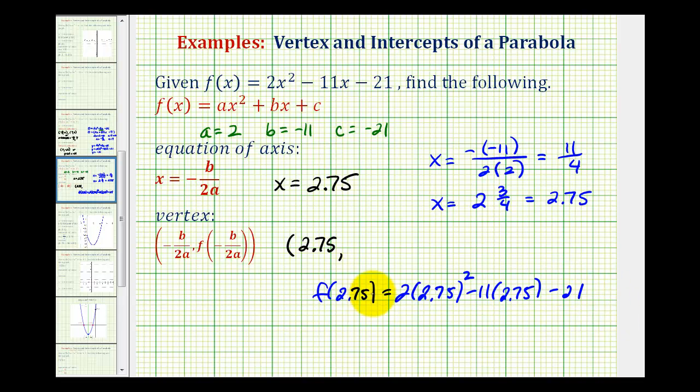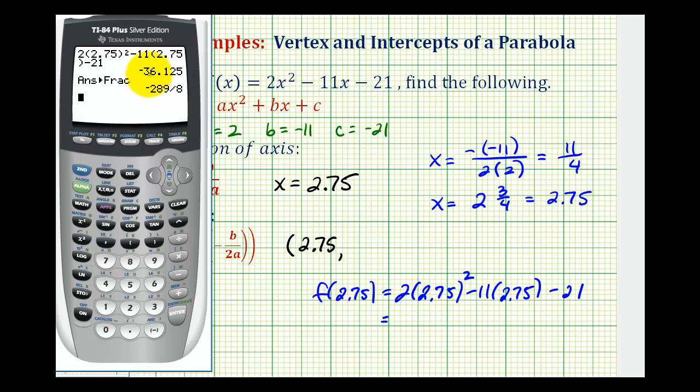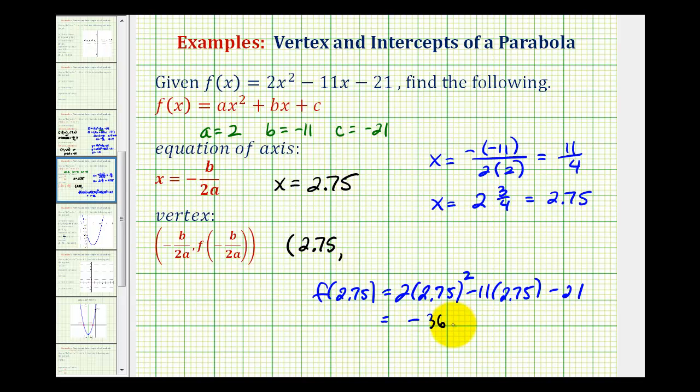Let's go ahead and do this on the calculator. Here's the squared key. So the y coordinate of the vertex is negative 36.125. If we did want this as a fraction, we can always press math, enter, enter. But since we are going to graph this, let's go ahead and use the decimal value. So the x coordinate is 2.75, and the y coordinate is negative 36.125.